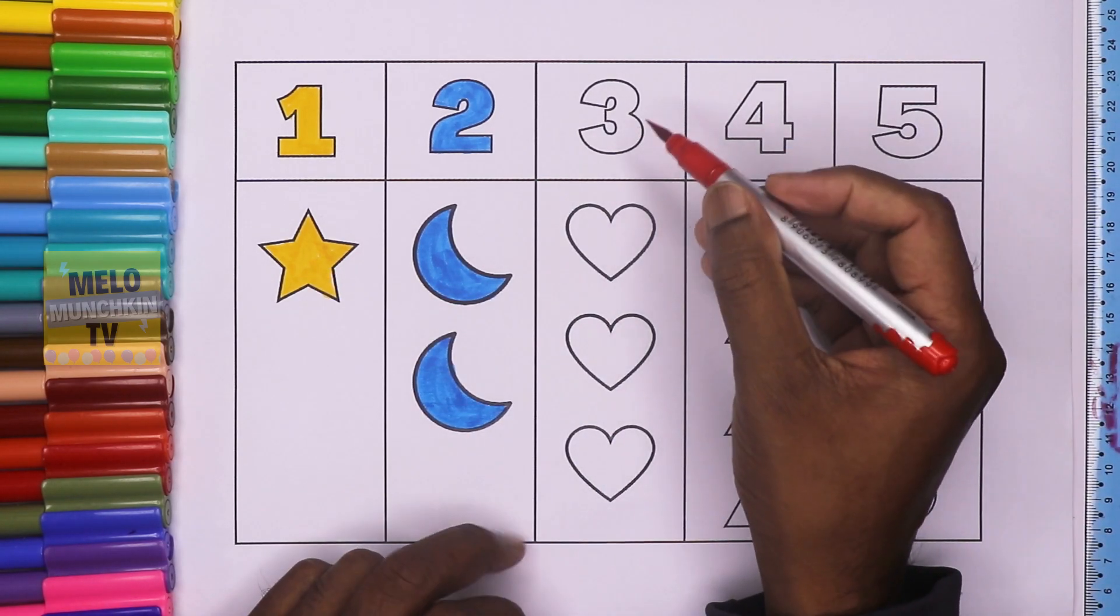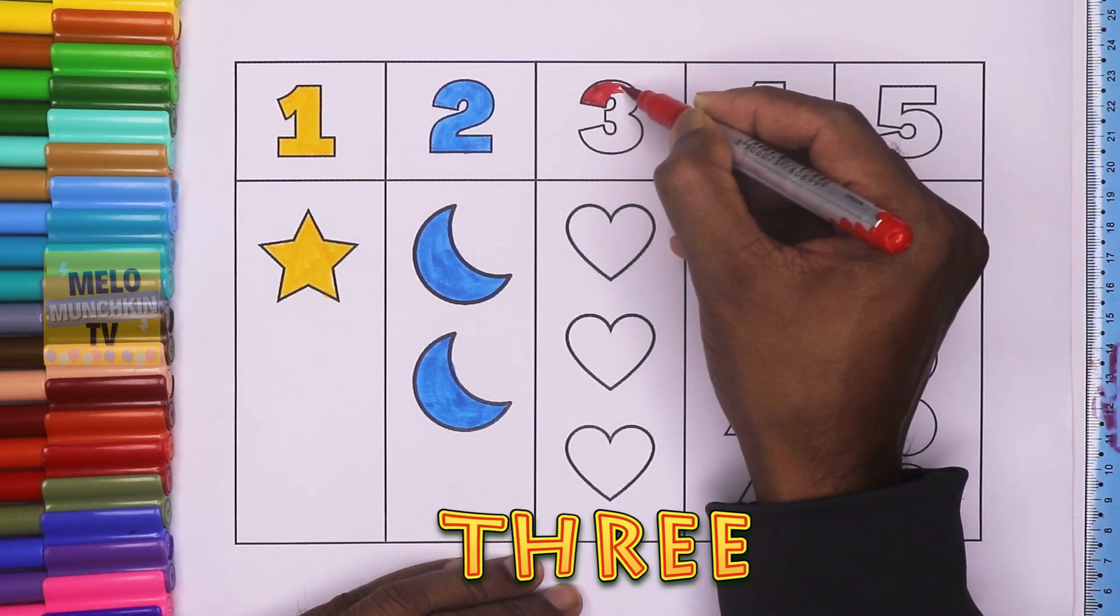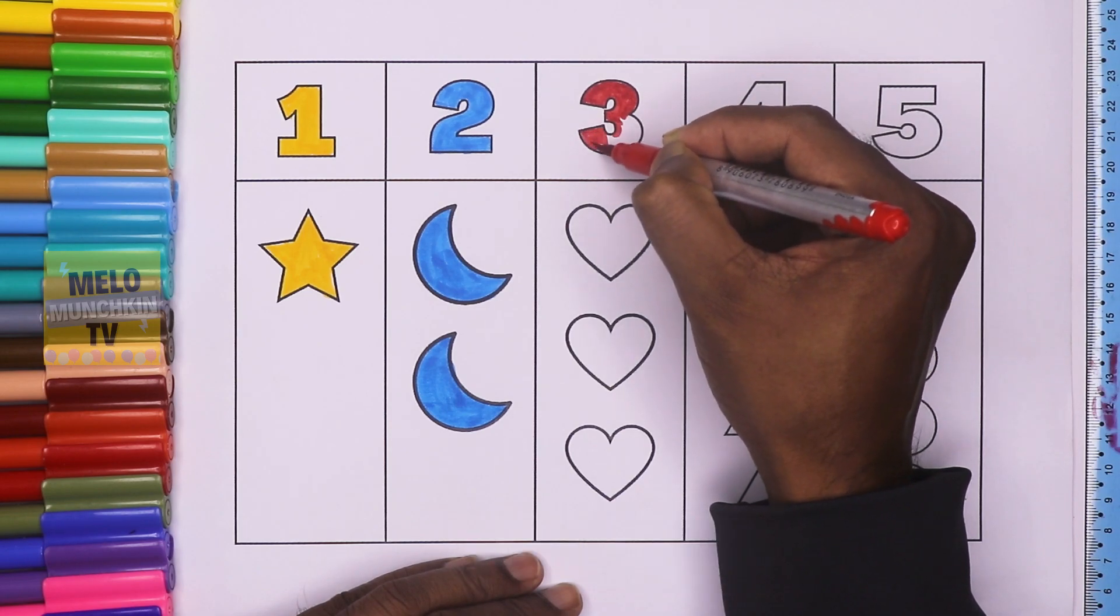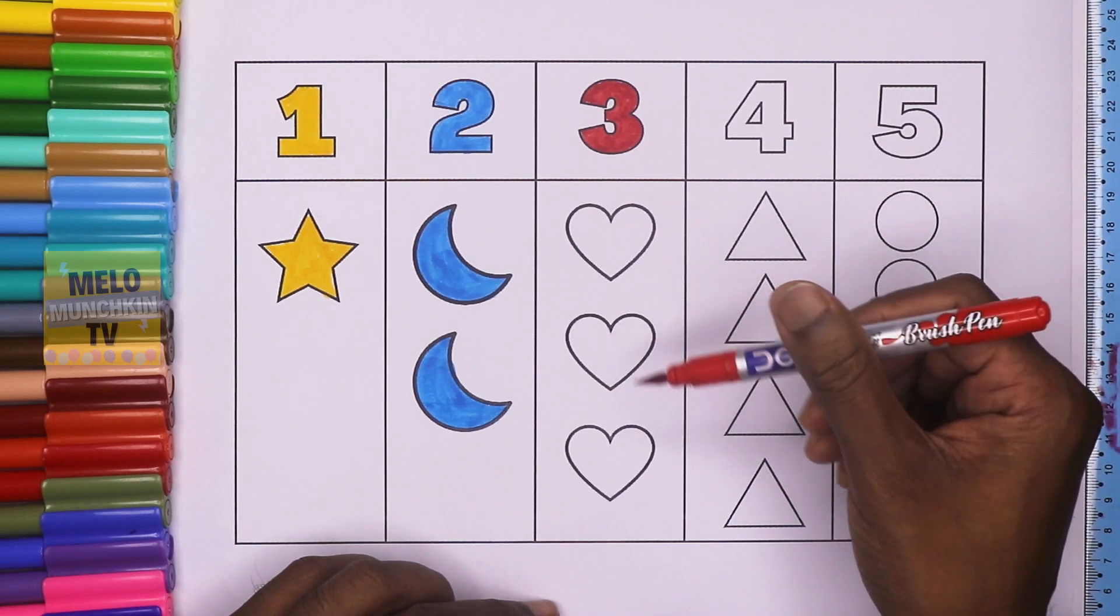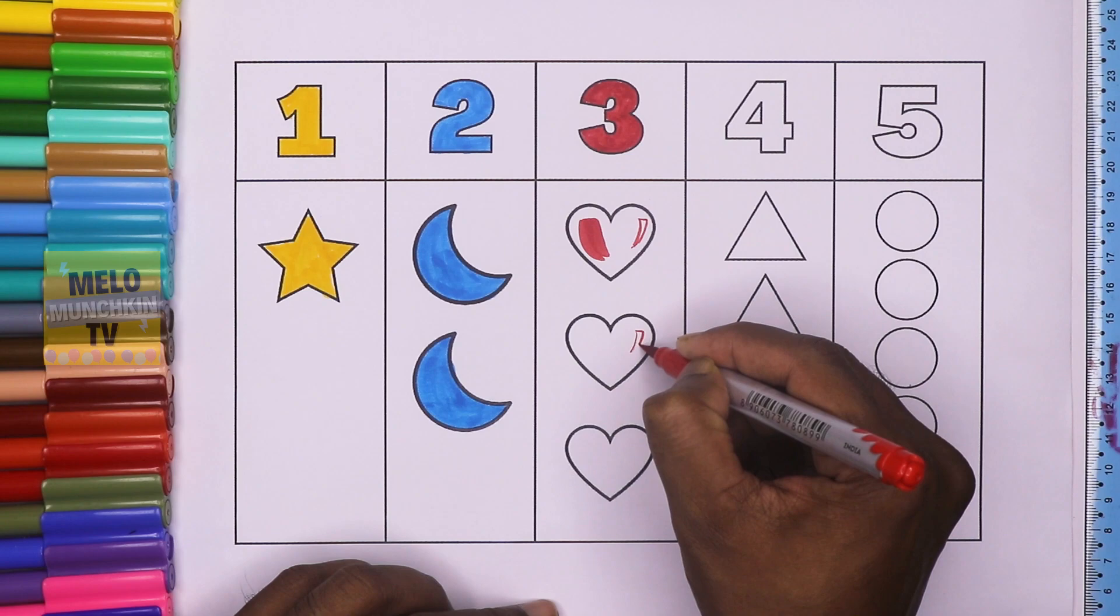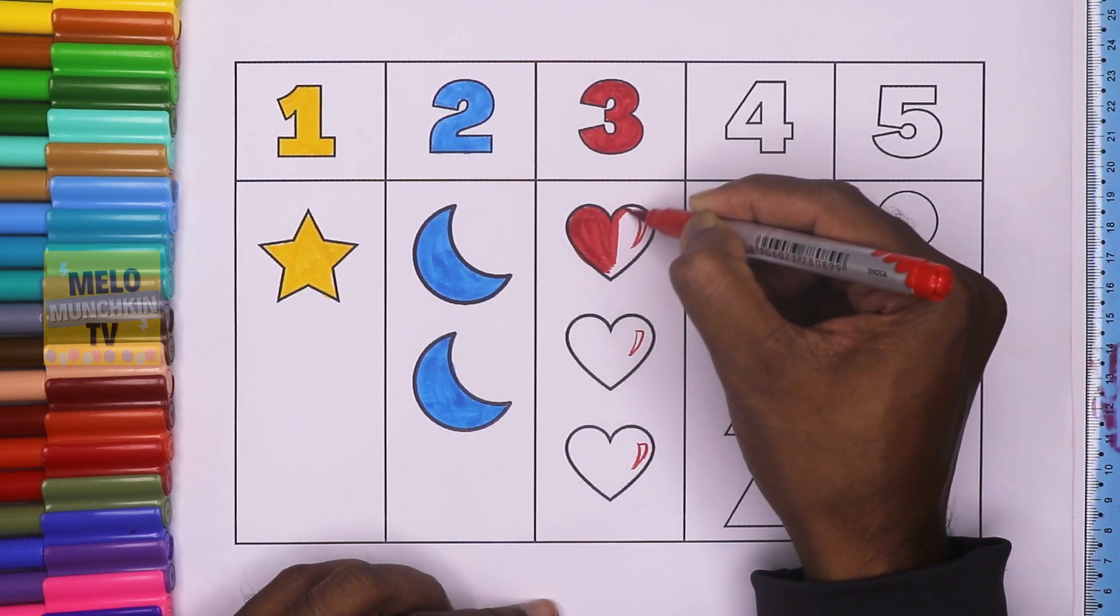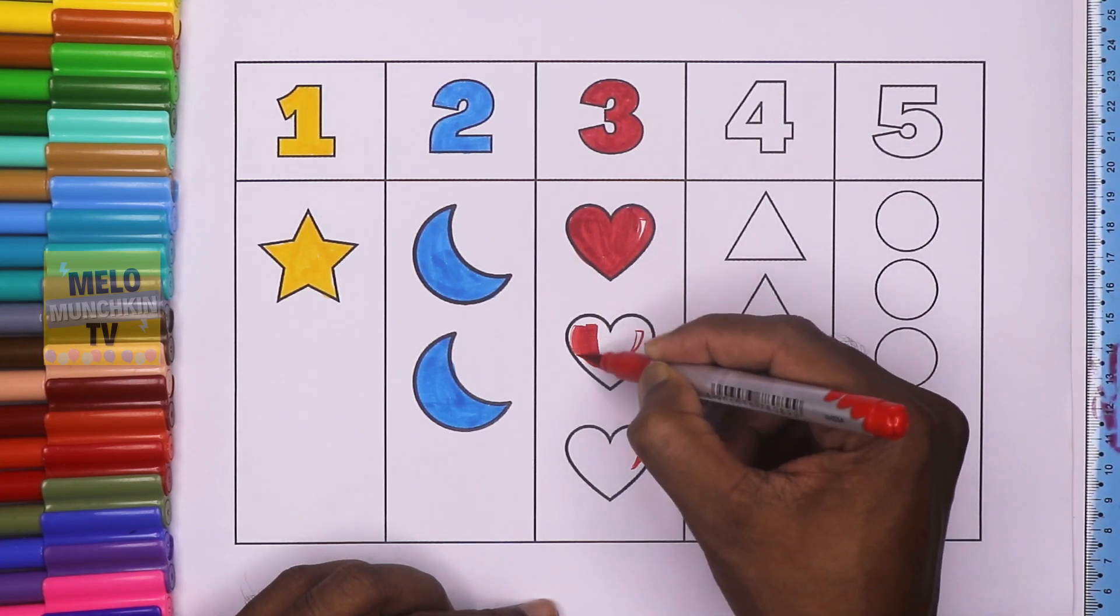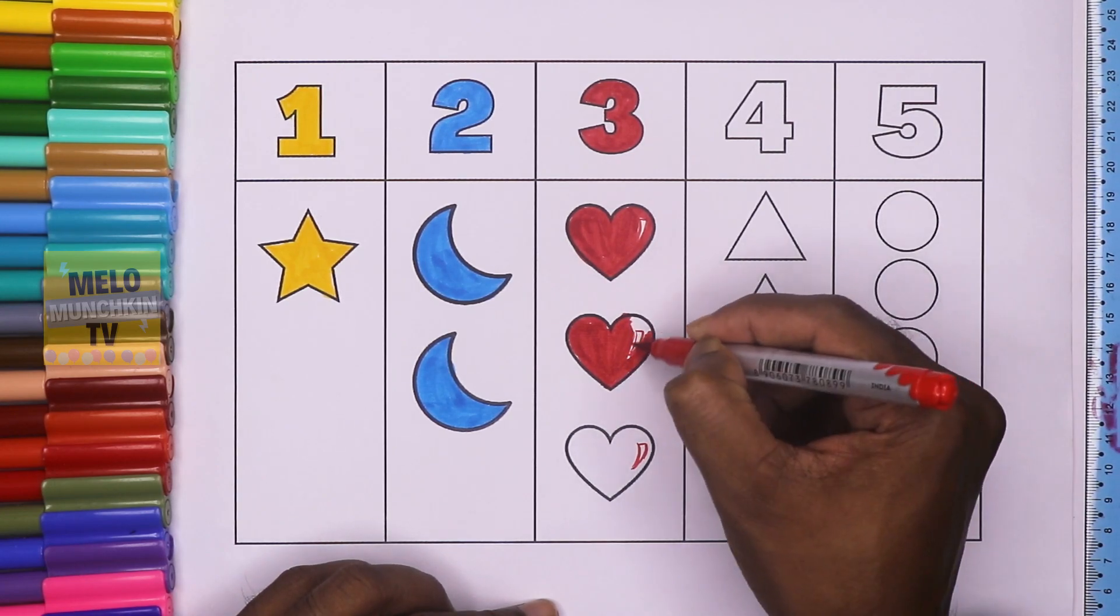This is number 3. T, H, R, E, E. 3. Let's color 3 hearts. The shape is heart. 1, 2, 3.